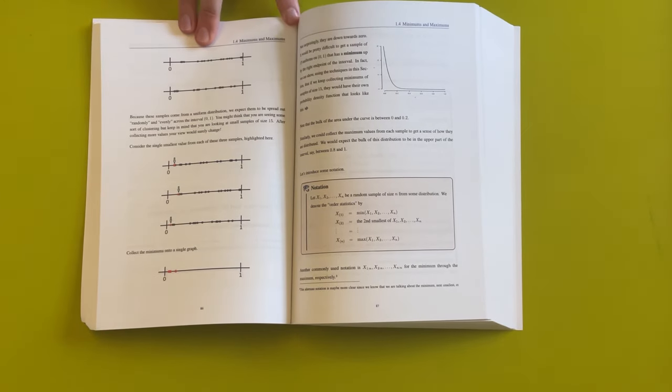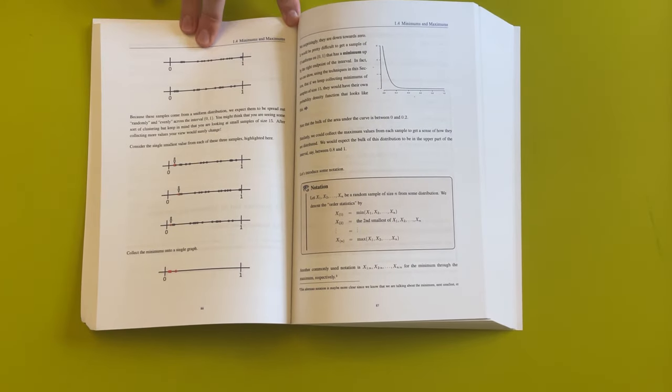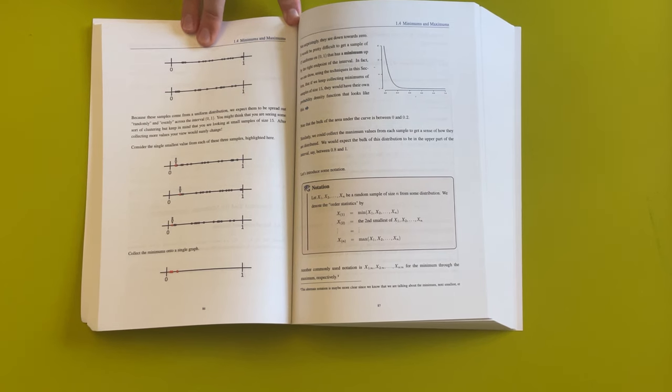Something I liked in chapter one was an early discussion on order statistics. This came up a lot later in the Casella and Berger book. I also remember another math stats book I really liked called In All Likelihood, and I seem to remember order statistics also being pushed a lot further back in that book as well. But I think it's super interesting to put order statistics in the first chapter.